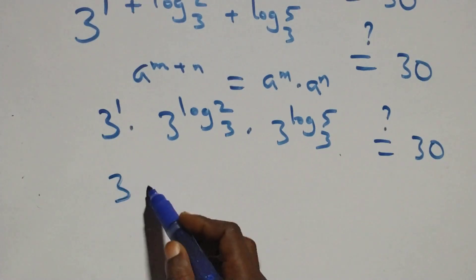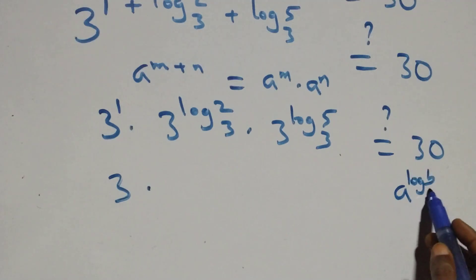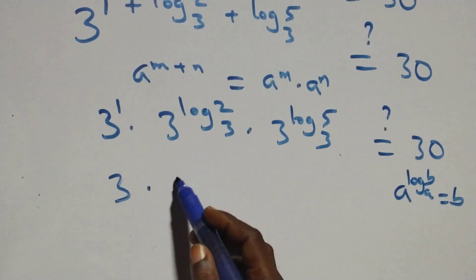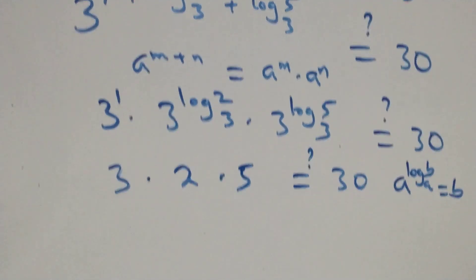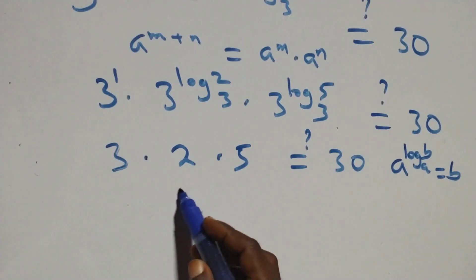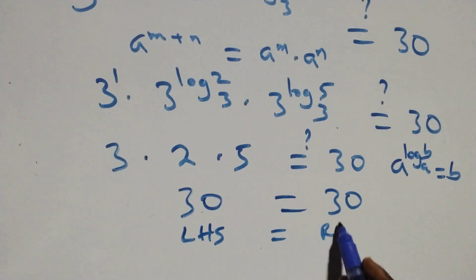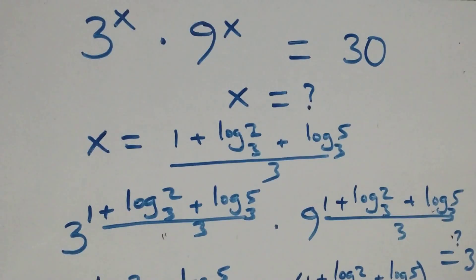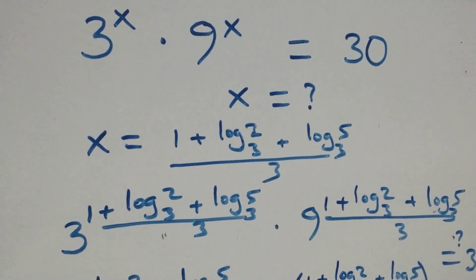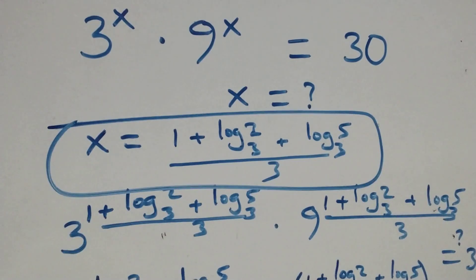This follows the rule: a raised to power log_a(b) equals b. So 3 raised to power log₃2 equals 2, and 3 raised to power log₃5 equals 5. This gives us 3 times 2 times 5 equals 30, and indeed 30 equals 30. The left-hand side equals the right-hand side. Therefore, x equals (1 plus log₃2 plus log₃5) over 3 satisfies the given problem.